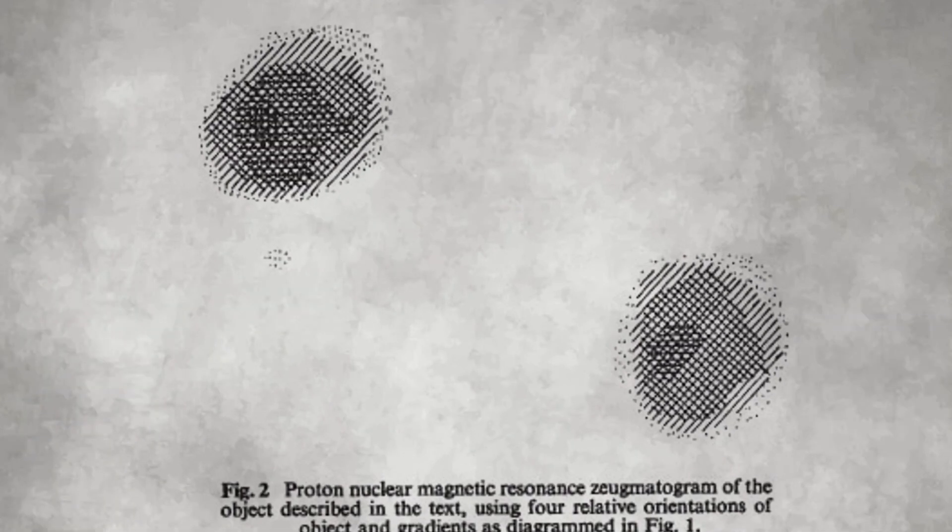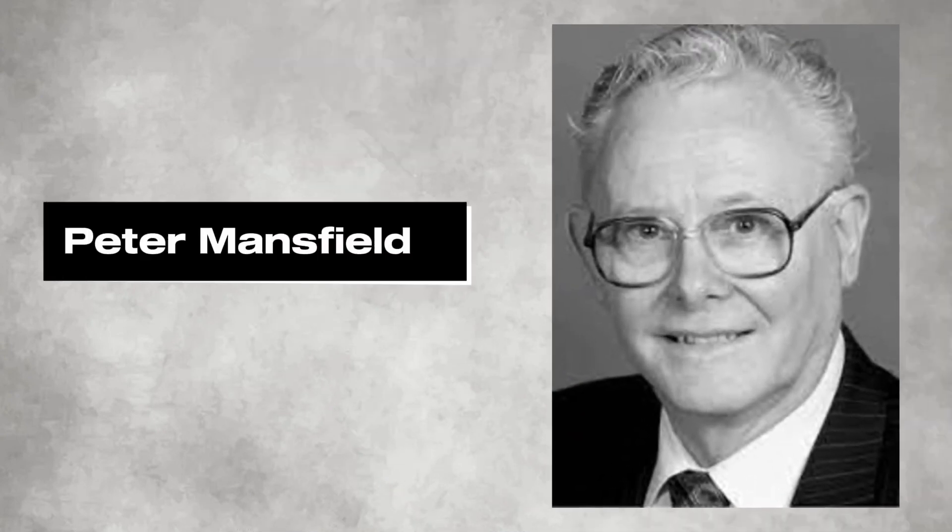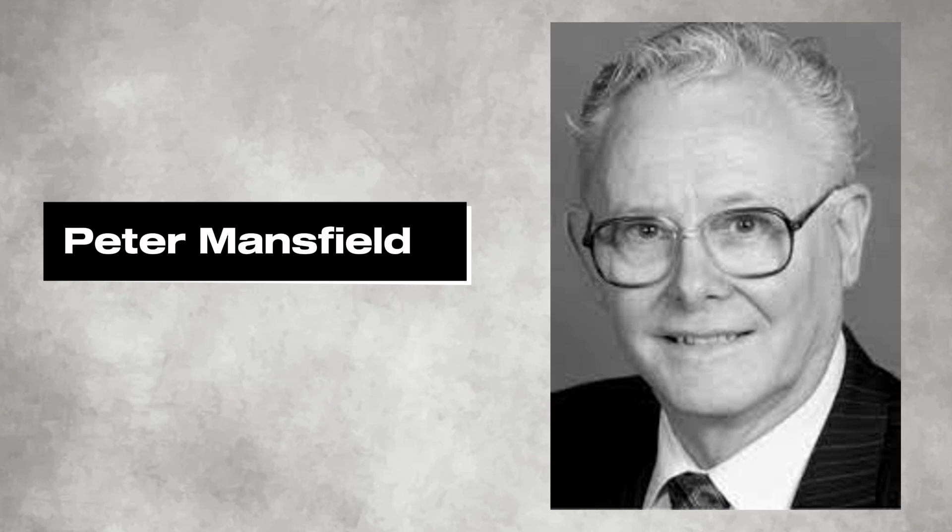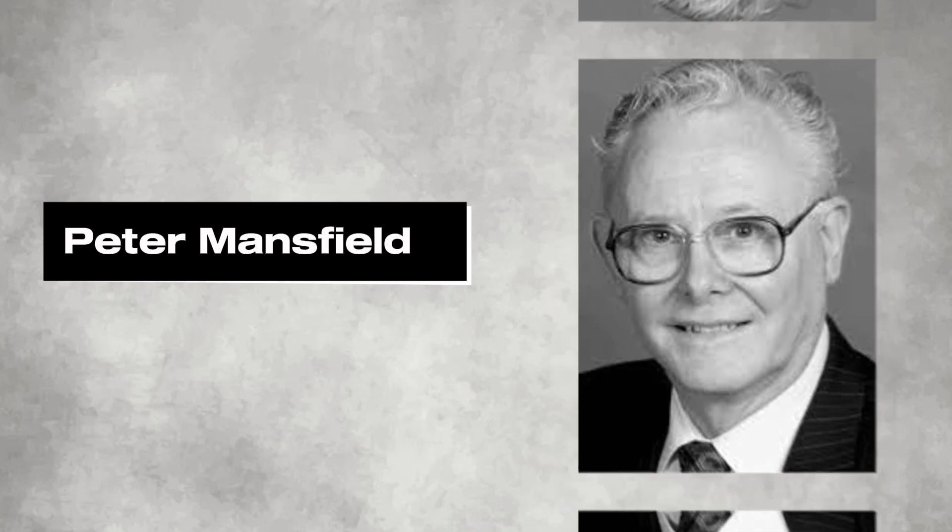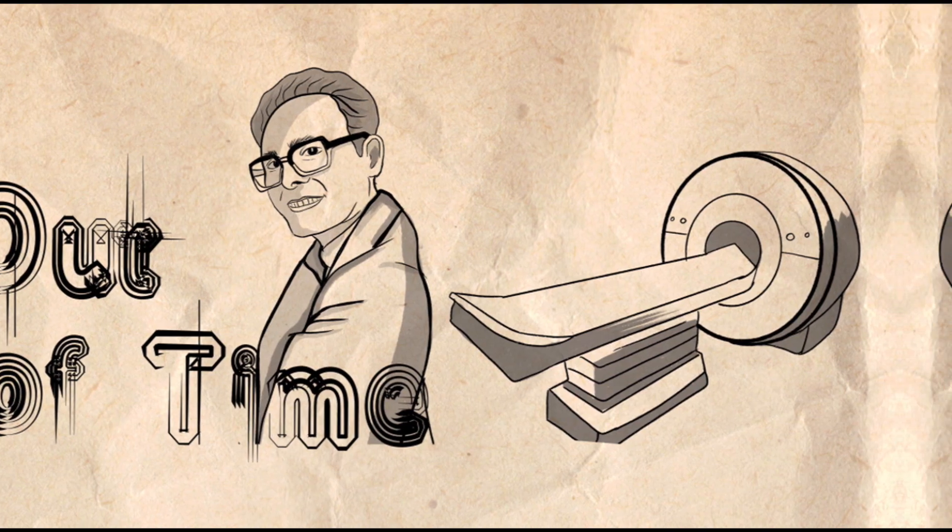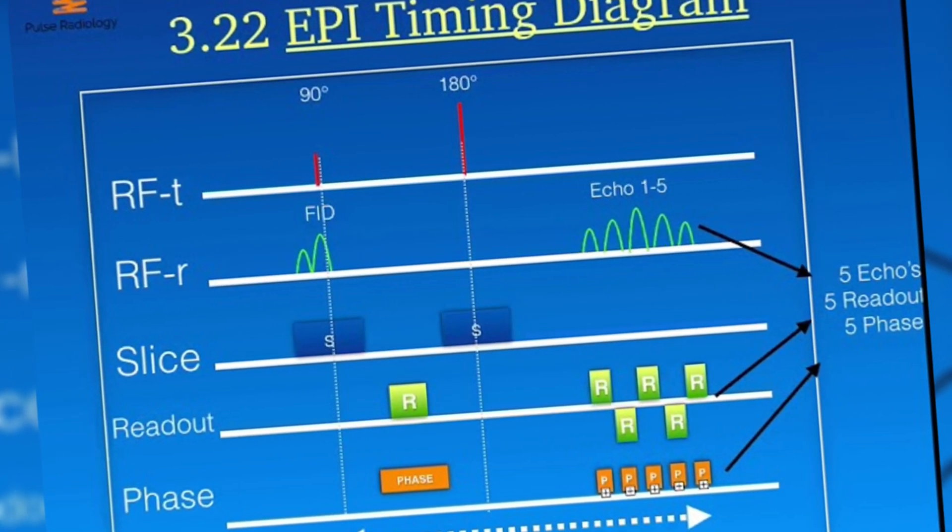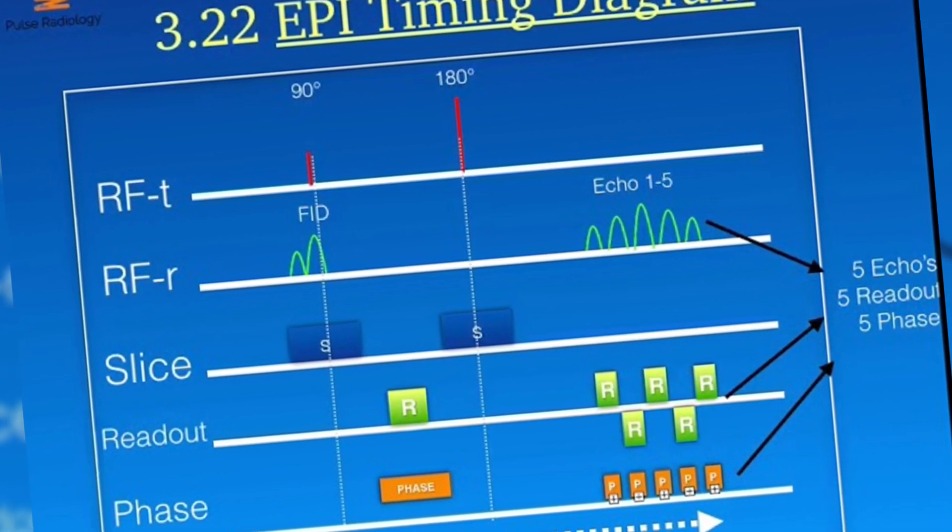Meanwhile, physicist Sir Peter Mansfield focused on improving efficiency, successfully reducing scan times for NMR technology to 15 to 23 minutes for a human body scan. This achievement paved the way for further advancements, including echo planar imaging (EPI), which minimized motion errors and significantly sped up the imaging process.